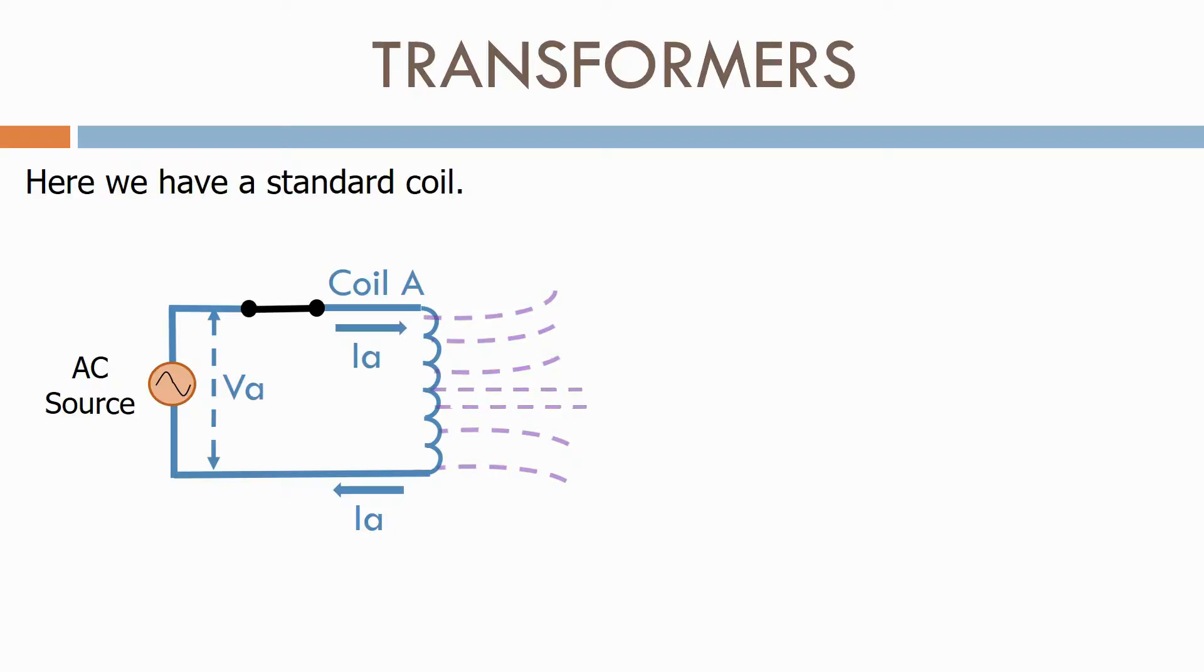When we close the switch, current flows through the coil, which becomes magnetized with an alternating magnetic field.